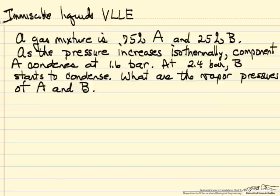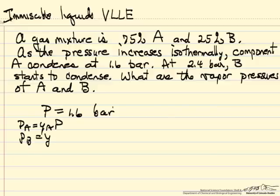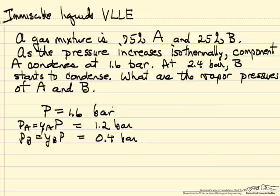Looking at the case where total pressure is 1.6 bar: in the vapor mixture, the pressure of A must be the mole fraction of A times the total pressure, and the pressure of B must be the mole fraction of B times the total pressure. So 0.75 times 1.6 gives a pressure of A equal to 1.2 bar, and the pressure of B is 0.4 bar. Since at this condition A is condensing, 1.2 bar must be the saturation pressure of A.